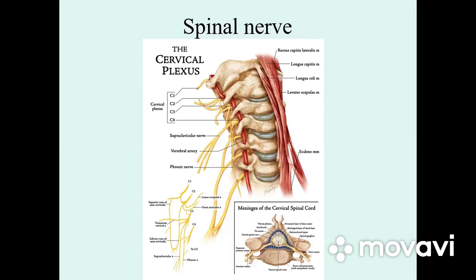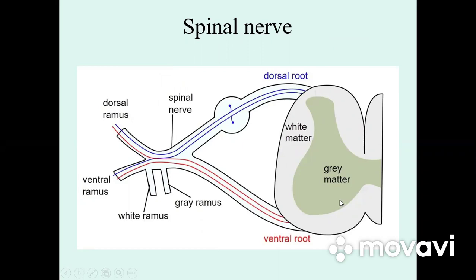The cervical plexus, plexus cervicalis, is formed by the anterior branches of four superior cervical nerves: the first, second, third, and fourth cervical spinal nerves. From each segment of spinal cord begins an anterior root, or ventral root, and a posterior root, or dorsal root.